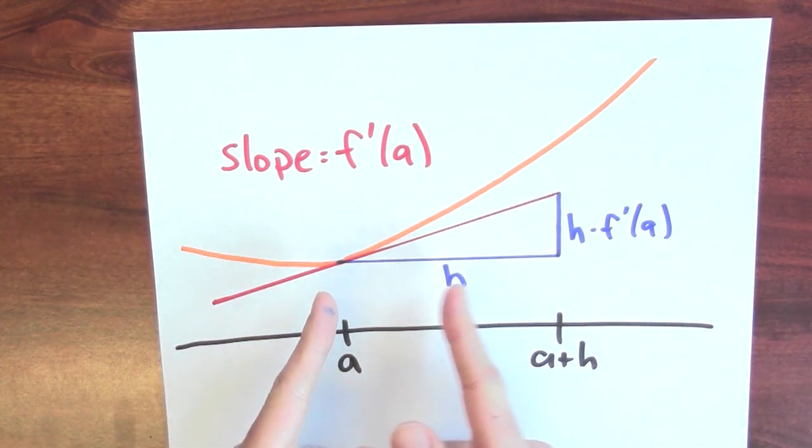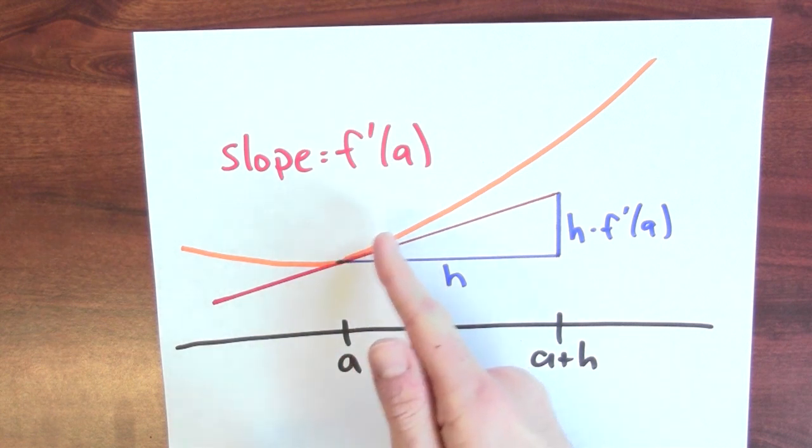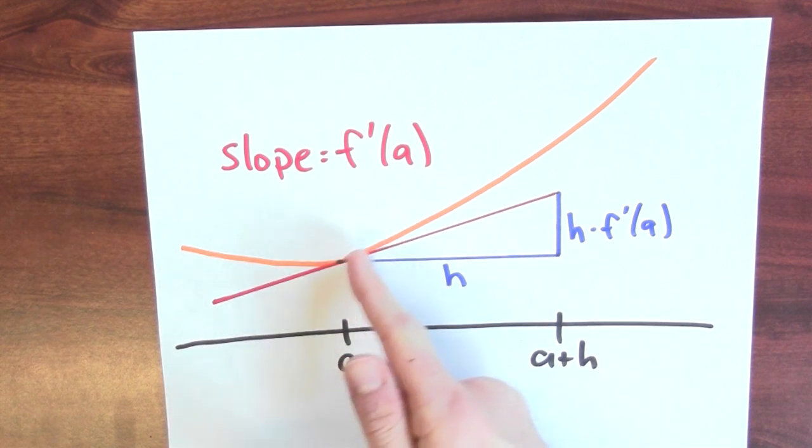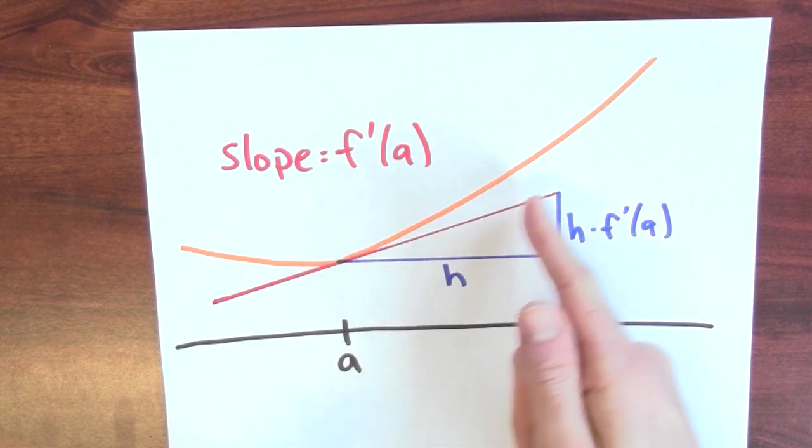Now, if I made h really, really small, I'd be doing an even better job of staying close to the graph of the function when I follow the tangent line.